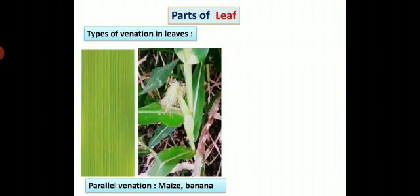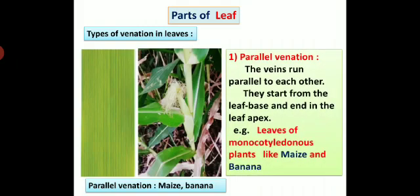Second type is parallel venation. You can observe parallel venation of a maize plant in this diagram. Parallel venation: the veins run parallel to each other. They start from the leaf base and end in the leaf apex. For example, leaves of monocotyledonous plants like maize and banana.